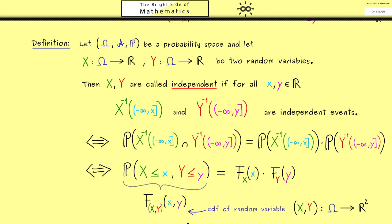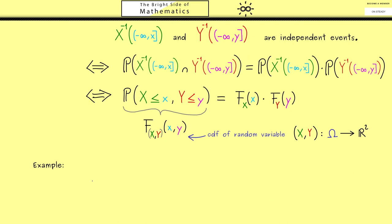Moreover, I can tell you this here is often called the joint cumulative distribution function. Okay, then I would say let's look at an example here.